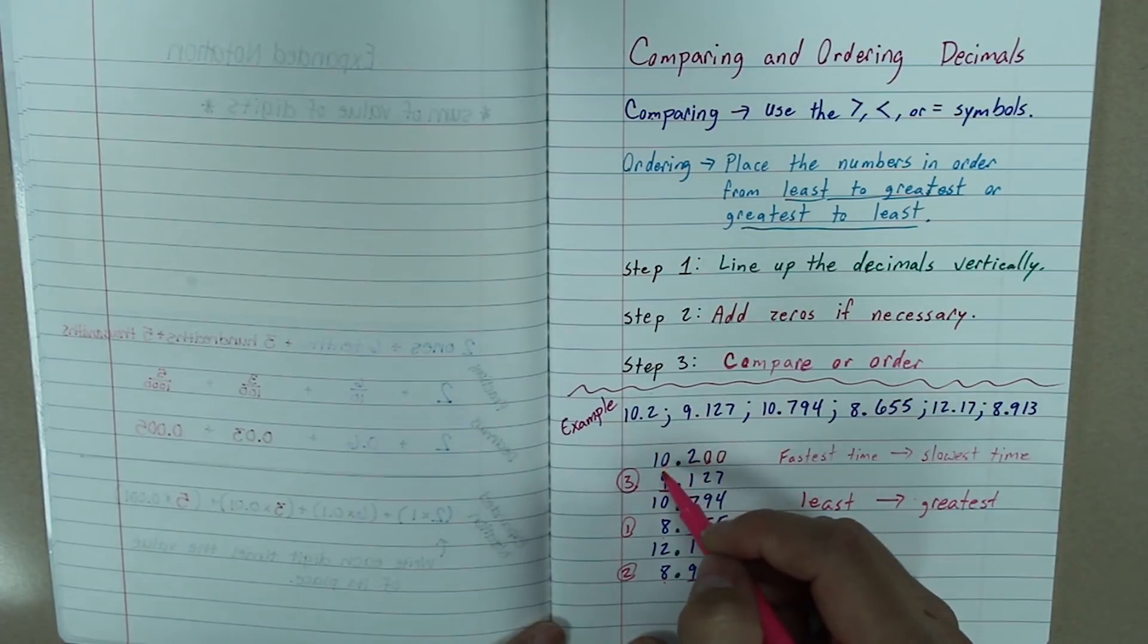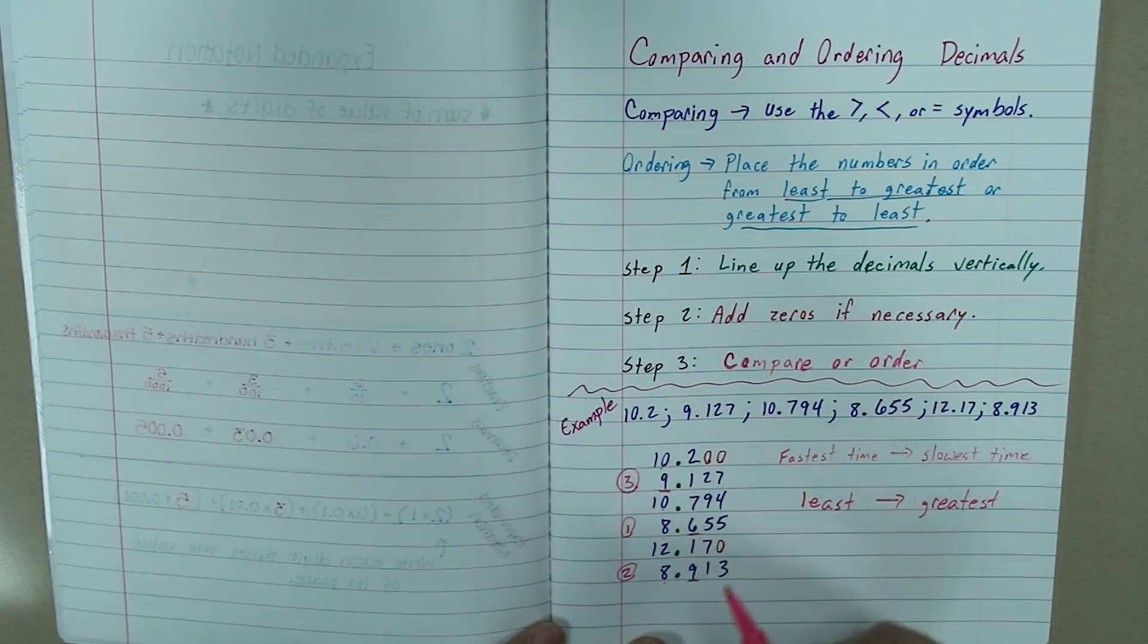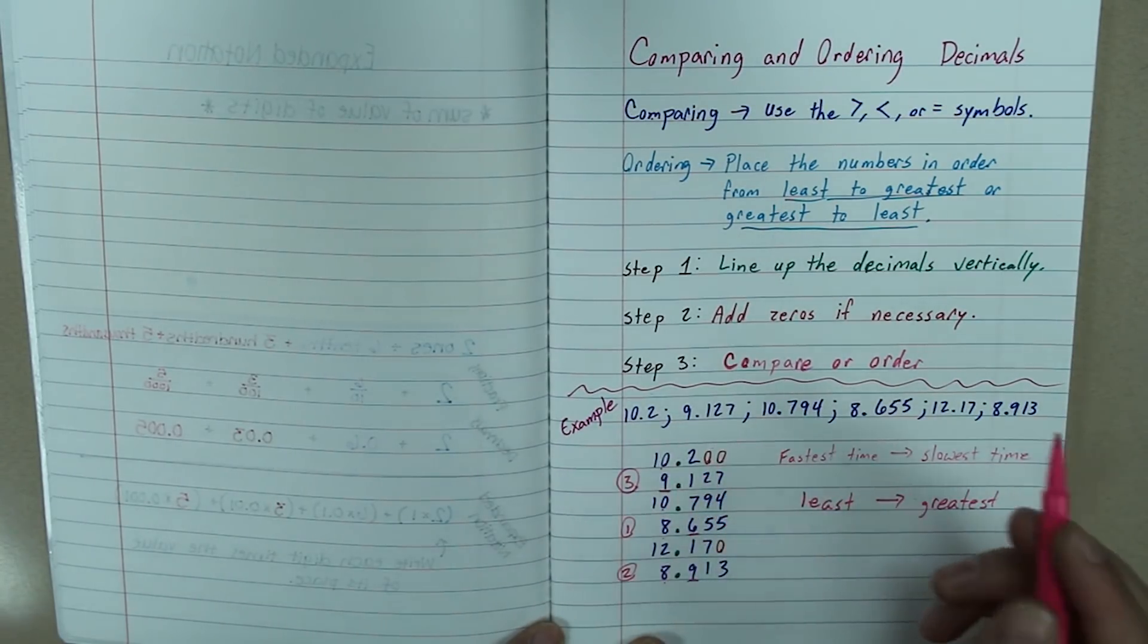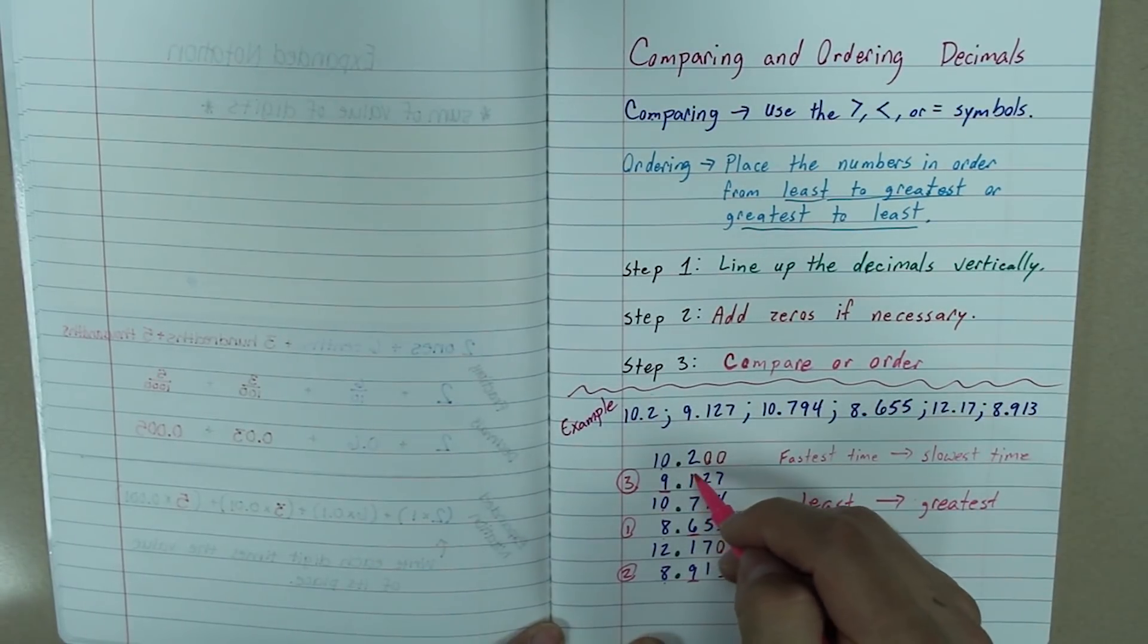Now, I am going to again, so now we have ten. We have two that are ten and one that is twelve. Well, ten is smaller than twelve. So, we are going to look at these two. So, I am going to look again at my tenths place, which two is smaller than seven. And you can also see that 200 is smaller than 794.